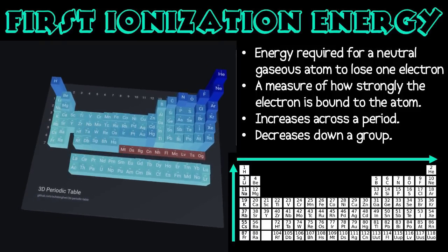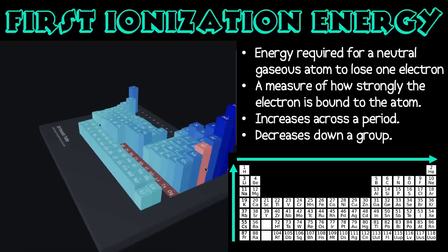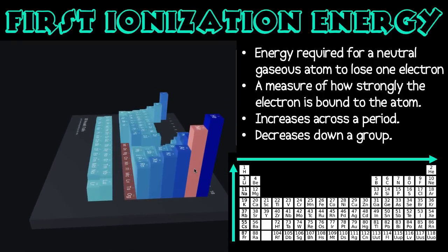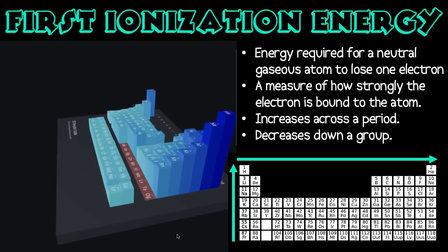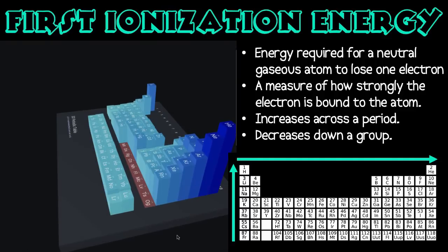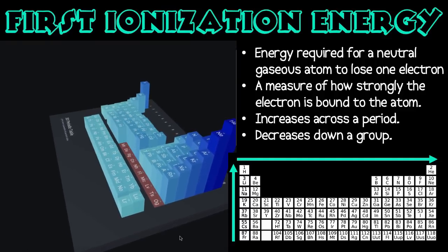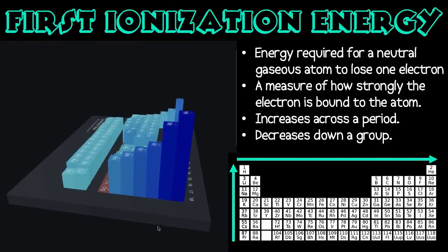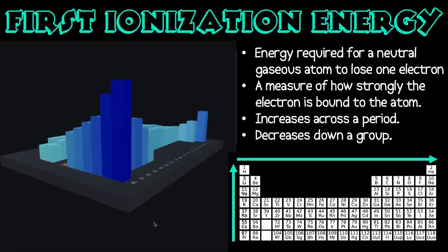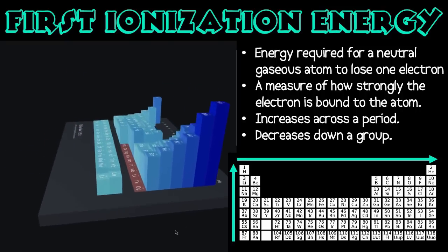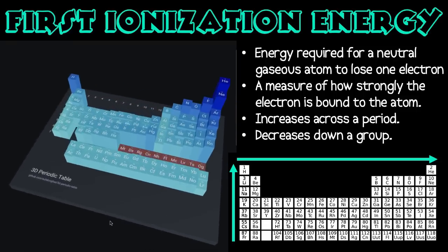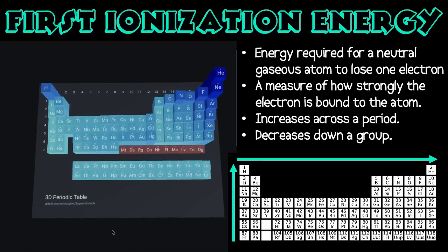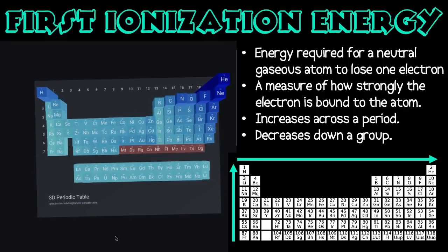The second trend is that first ionization energy decreases as we go down a group. This is due to the increasing number of orbitals holding the electrons as you move down, which increases the distance from the nucleus to the outer electrons and decreases the electrostatic pull. Although the number of protons in the nucleus is becoming larger, the electrons in the inner shells tend to block the outermost electrons from the full force of the nucleus.